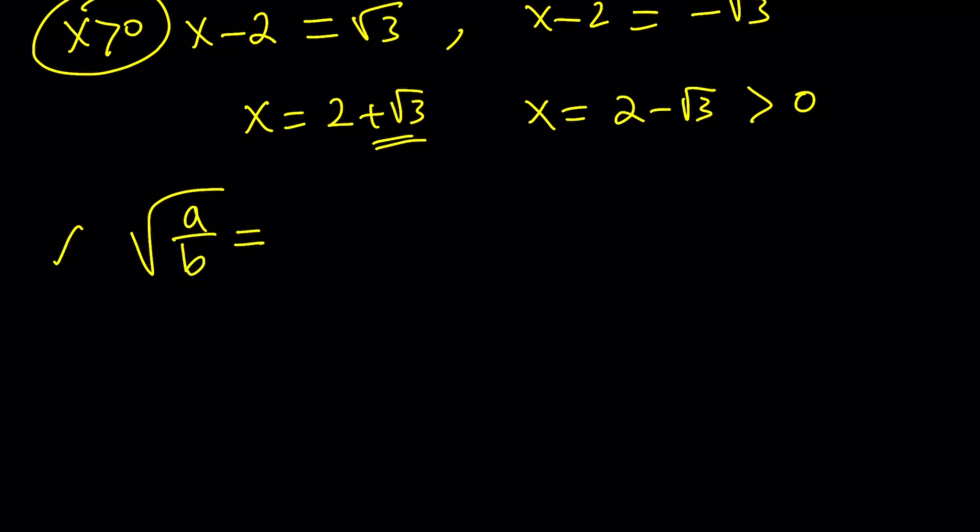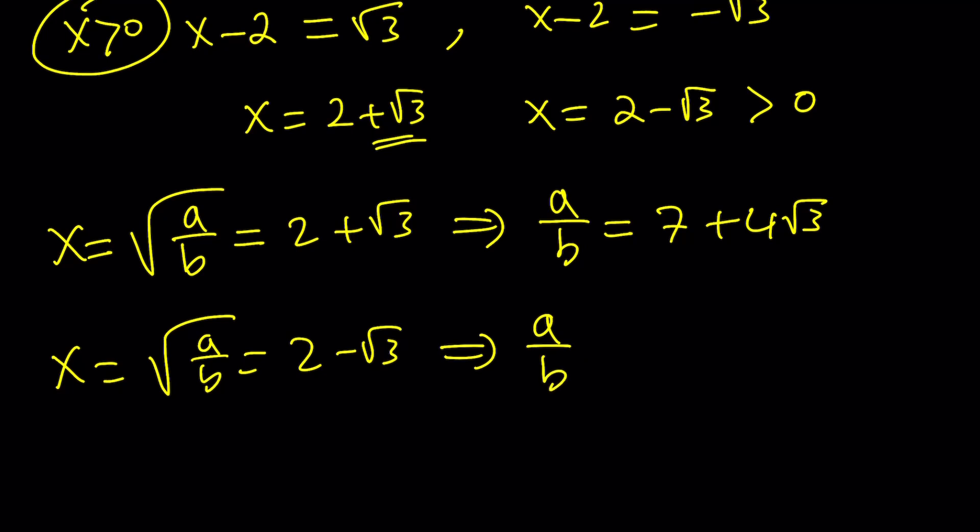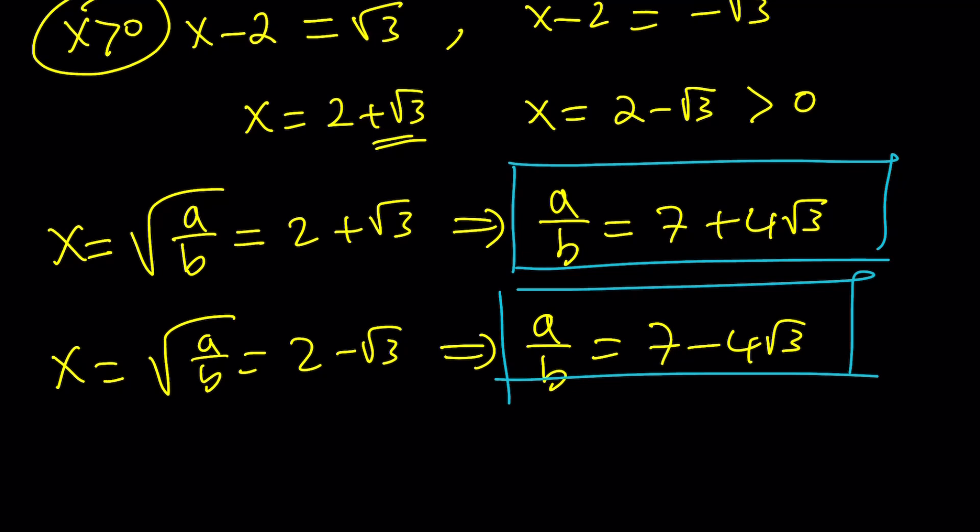So if X is equal to 2 plus root 3, which is the square root of A over B, by squaring both sides, we get 7 plus 4 root 3. That's one of the values of A over B. And for the other one, we're going to use 2 minus root 3. And then, if you square both sides again, you're going to get the conjugate. So if you have two conjugates and you square them, their squares are also conjugates, which is nice about conjugates. So these are going to be the solutions, and they are both good, because they are both positive. Great. So this is basically the first method.